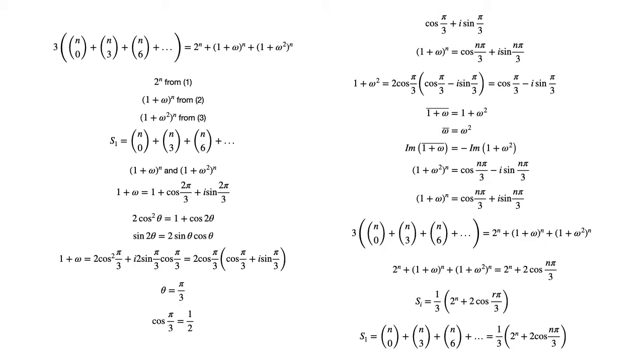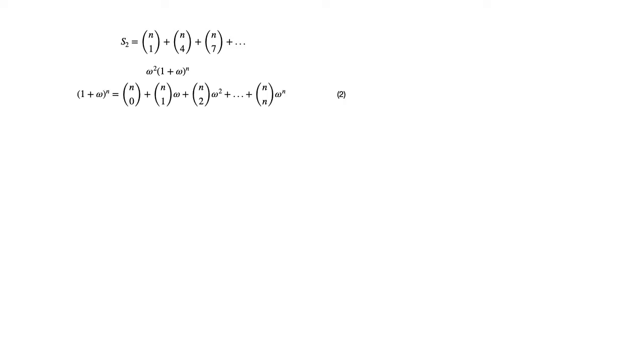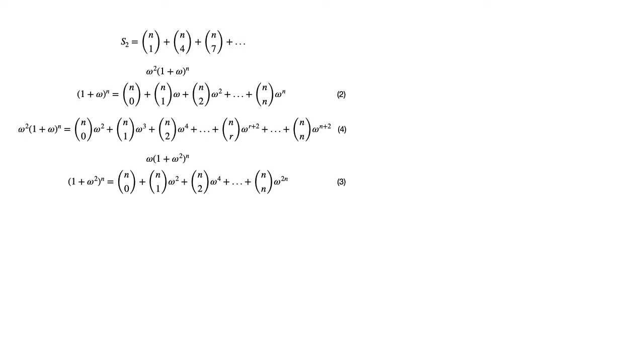With the case for S1 shown to be true, we now turn our attention to S2. We apply similar principles as we did for S1. It should be noted that all the hard work the problem demands has been completed in computing S1, and all that is left is some simple algebraic manipulation. We now compute omega²·(1+omega)^n, which we name equation 4, by multiplying equation 2 by omega². Then we calculate omega·(1+omega²)^n by multiplying equation 3 by omega, naming this equation 5.